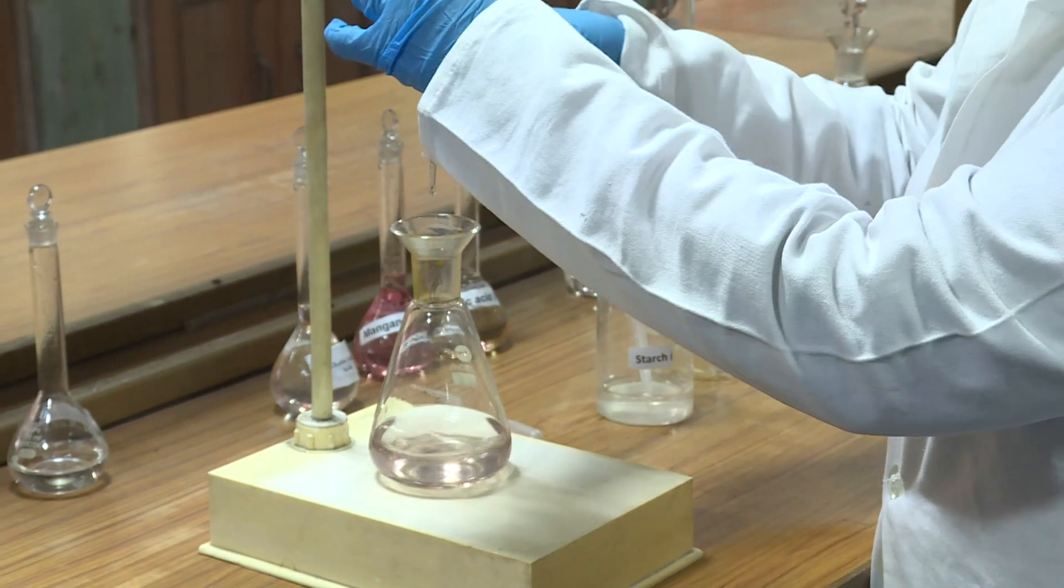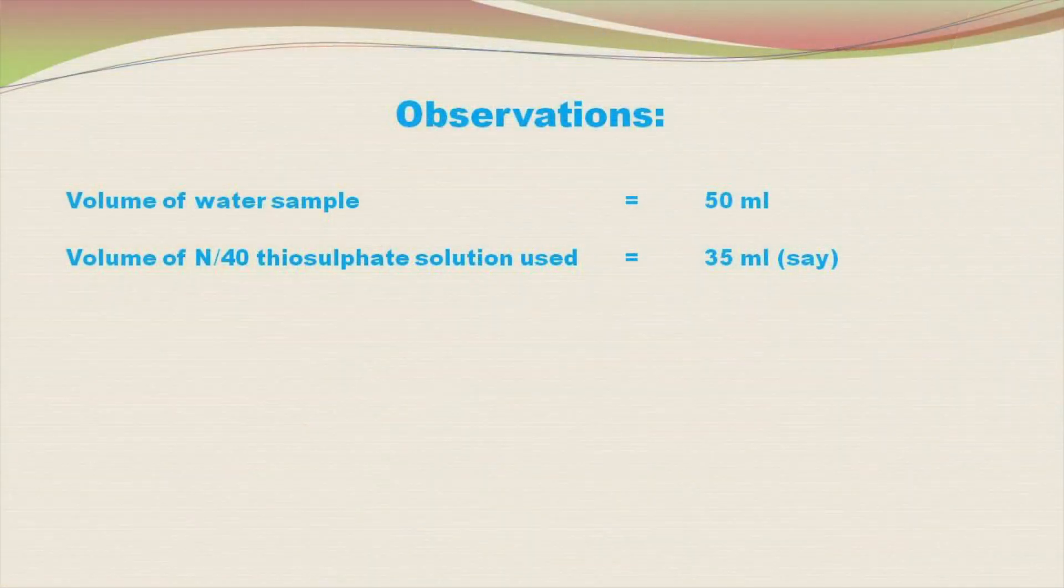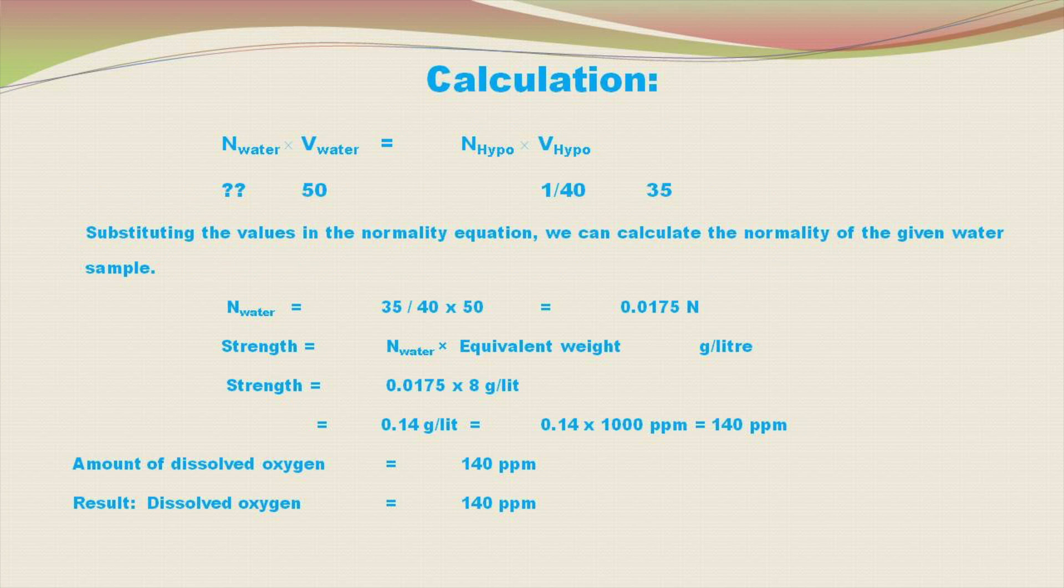Record the volume of hypo used. Calculation: Based on law of equivalence, i.e., N₁V₁ = N₂V₂. Result: Report the concentration of dissolved oxygen in the given water sample in ppm.